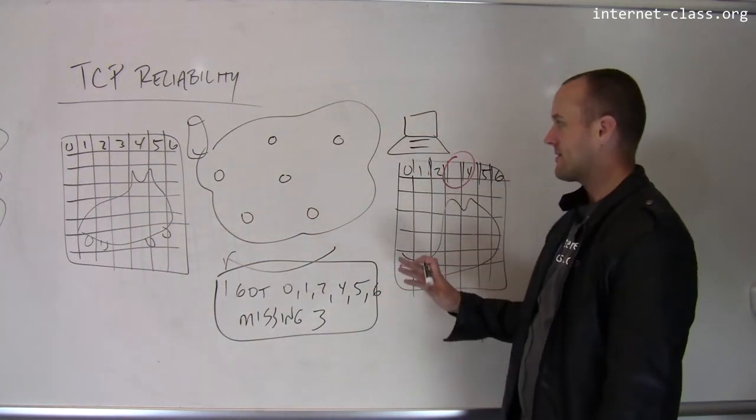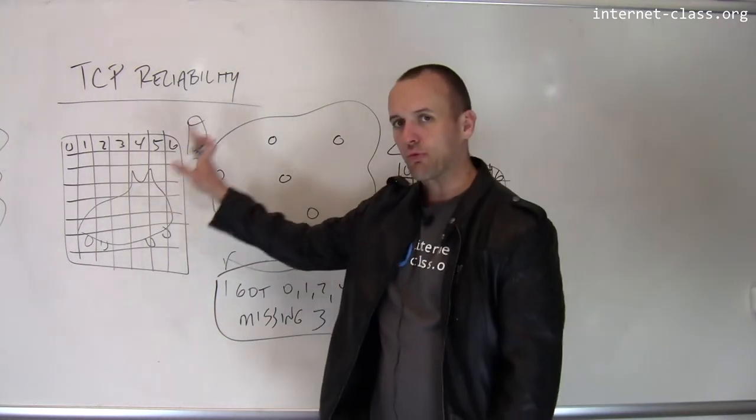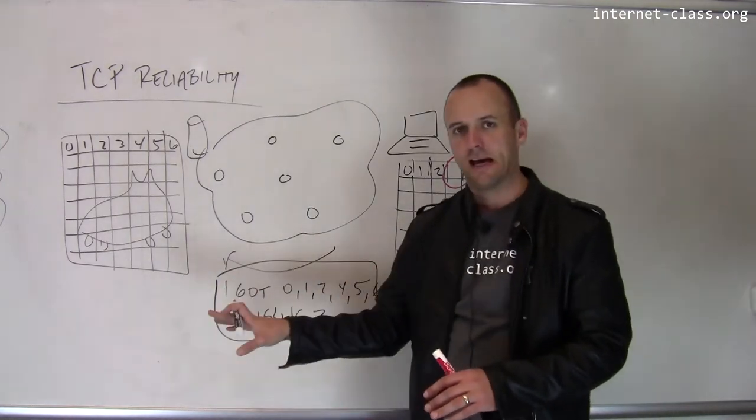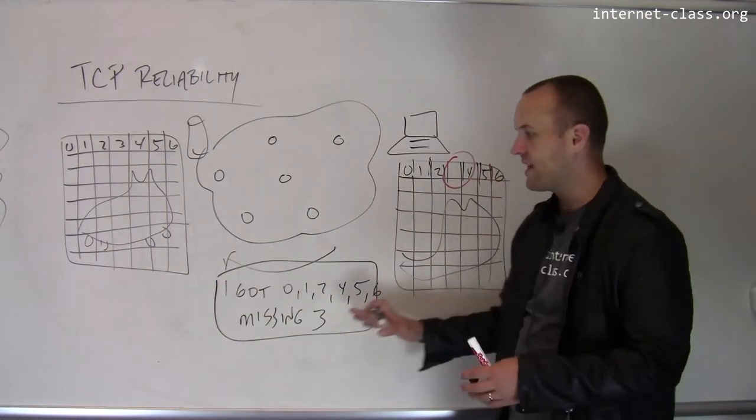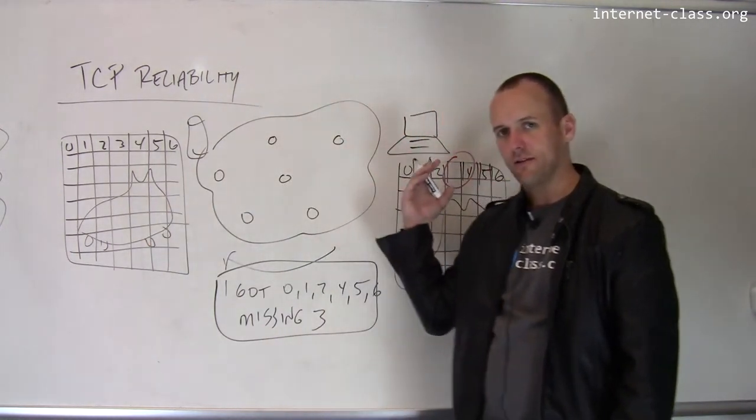So the protocol is robust if data packets are lost, because the sender will retry. It's also robust if the acknowledgement packets, or the information that the receiver is sending back, is lost, because those will also just lead the sender to retry.